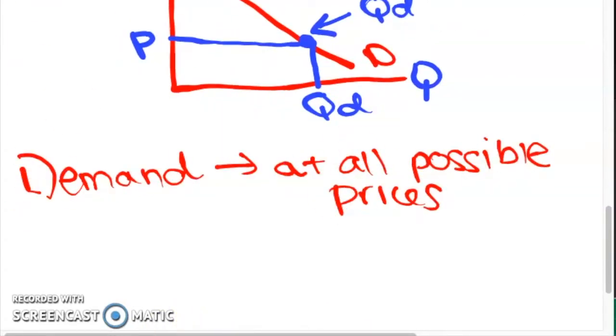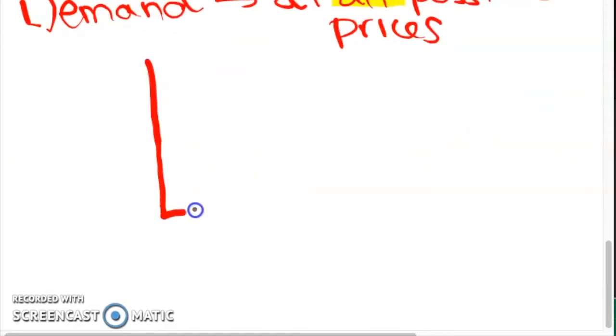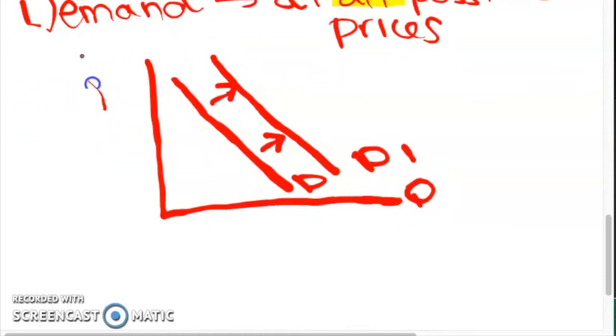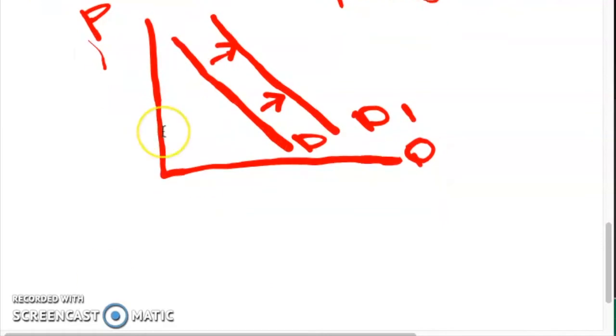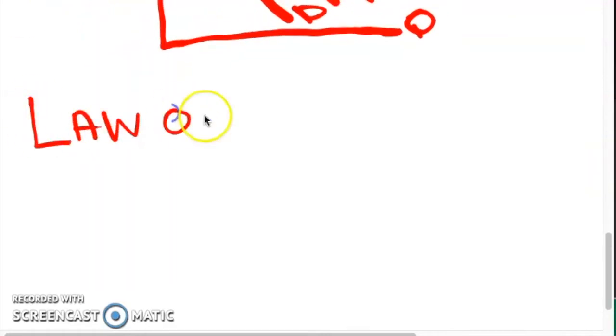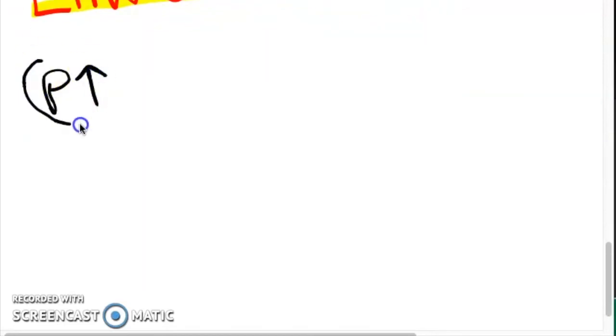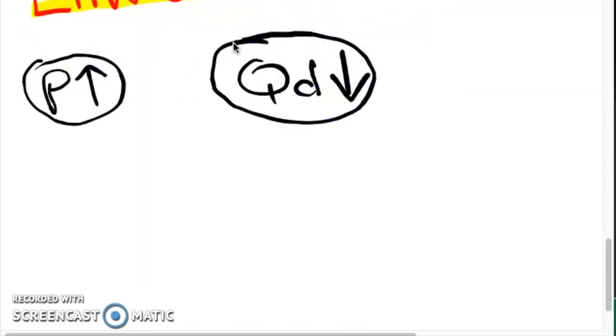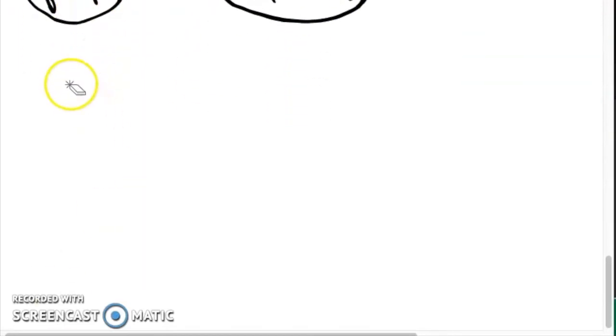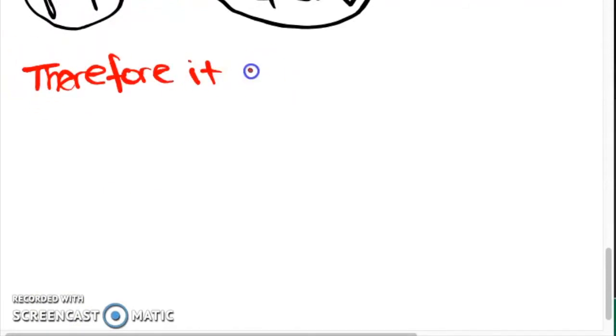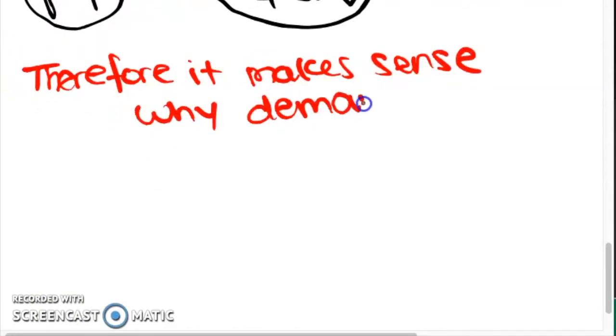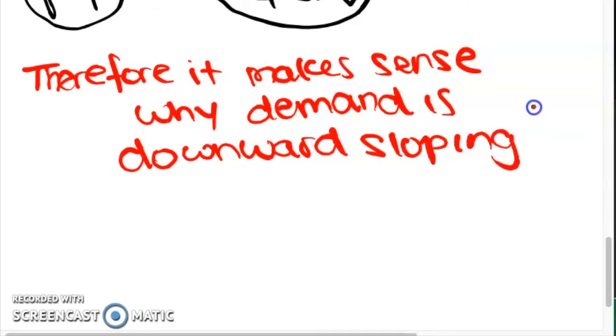We will come back to this when we're looking at non-price determinants of demand. Now the law of demand says that as the price of a good increases, the quantity demanded of the good falls, ceteris paribus. This makes sense if we remember back to our assumption that consumers are utility maximizing, meaning that they want to get the most benefit out of the money that they're using.